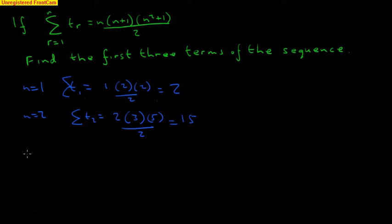And let's find the third term. We've got n equals 3. We get the sum to the third term, and that is 3 times 3 plus 1, which is 4, times 3 squared, which is 9 plus 1, which is 10. And that's all divided by 2. OK, 2 goes into 10, 5 times. 5, 4's are 20, and 3's are 60.